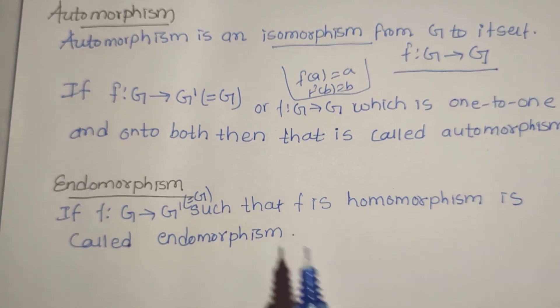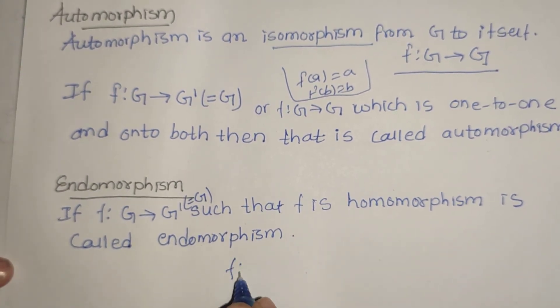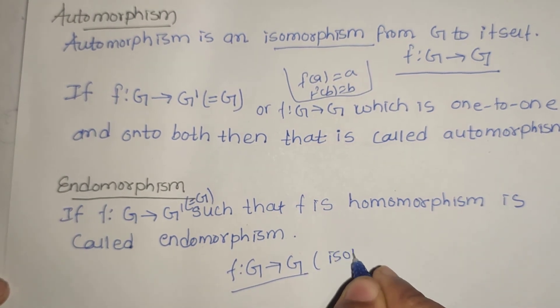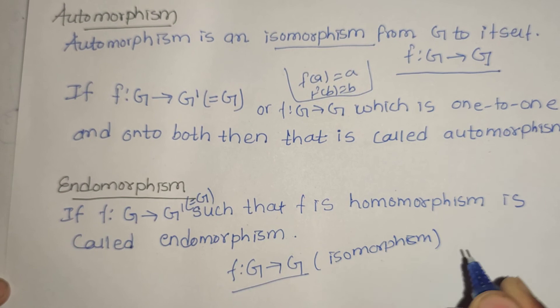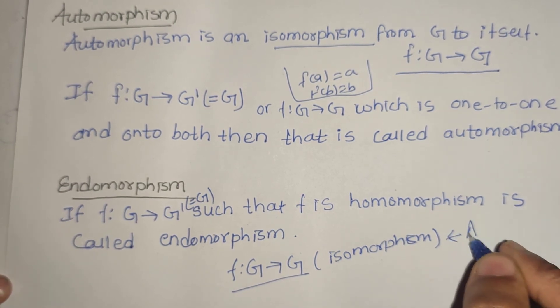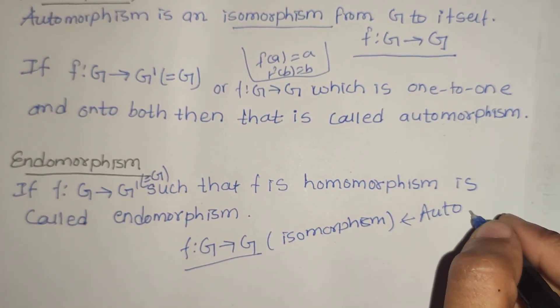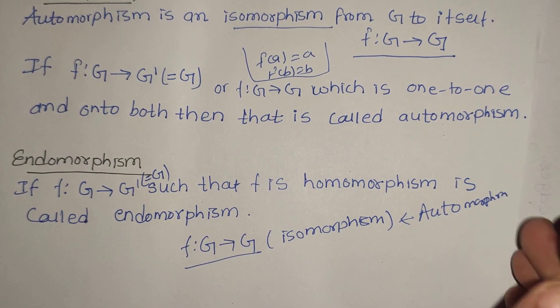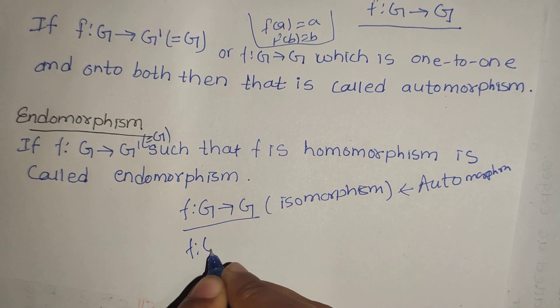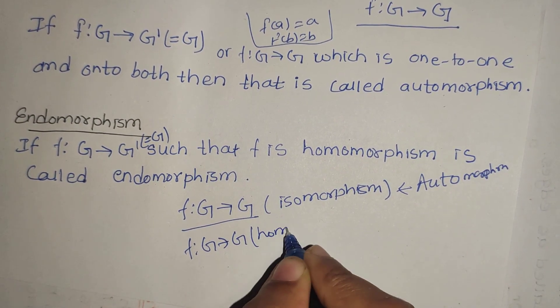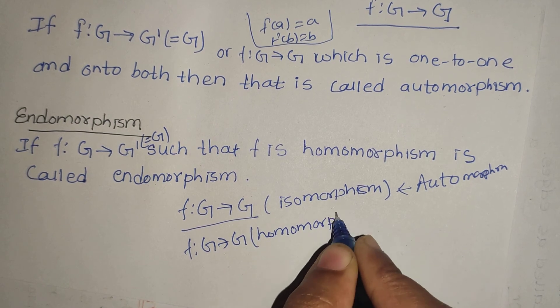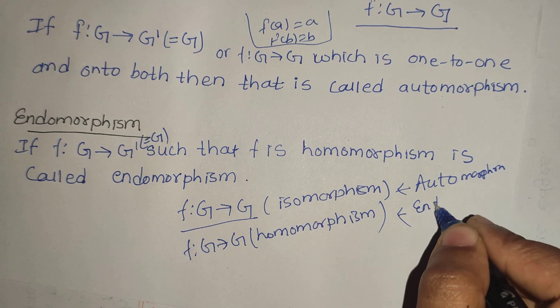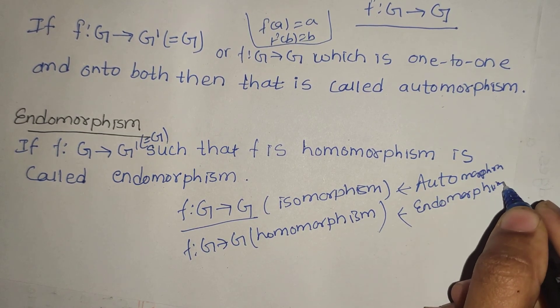If G' is again equal to G, meaning f: G → G, and it is isomorphism, then we call it automorphism. But if f: G → G and it is only homomorphism, then if it is only homomorphism, this is endomorphism.